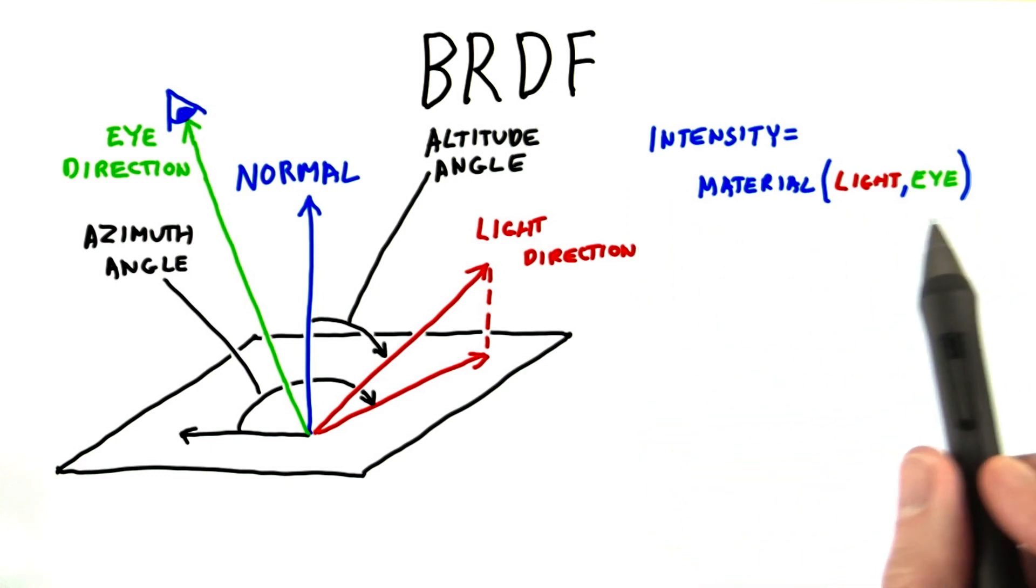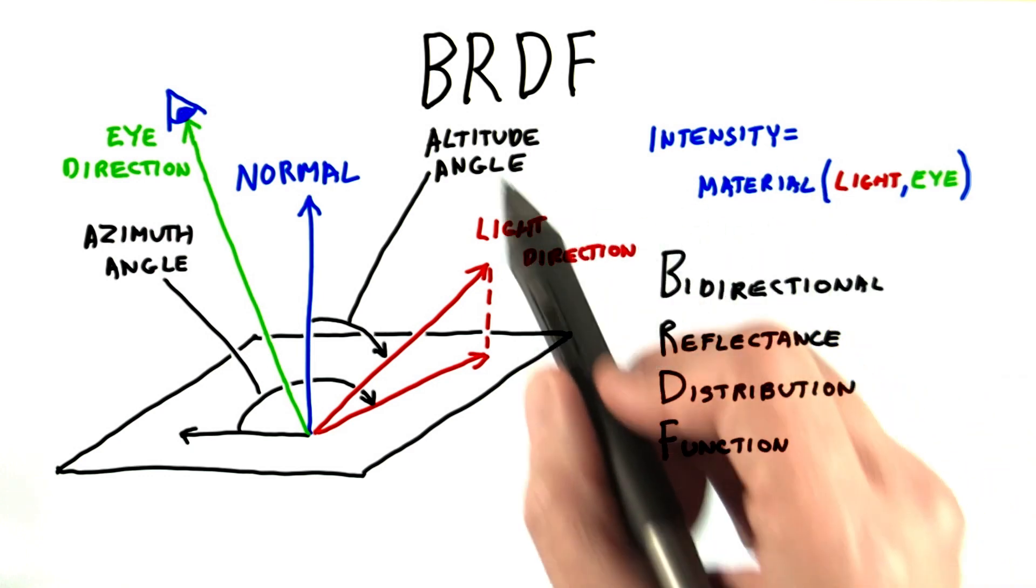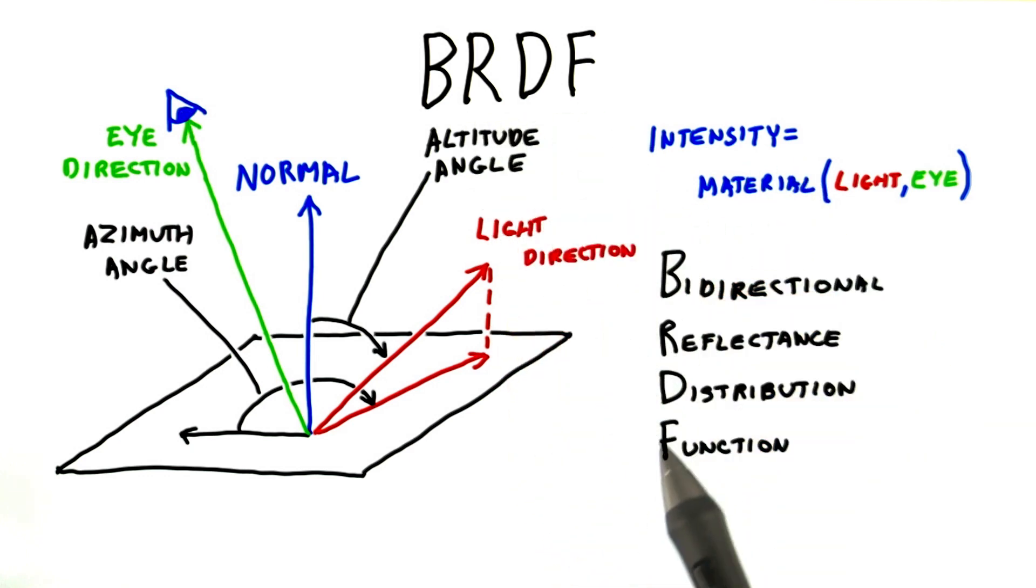Given a light and eye direction, give back an intensity. This function is called the BRDF, which stands for bidirectional reflectance distribution function.